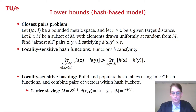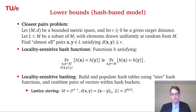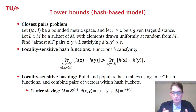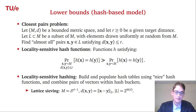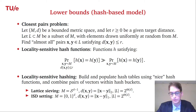To instantiate this for lattice sieving, the space is the unit sphere, and two vectors being close corresponds to having a large dot product — equivalently, small angular distance. Note that the size of the list L encountered in lattice sieving is exponential in the dimension of the space.